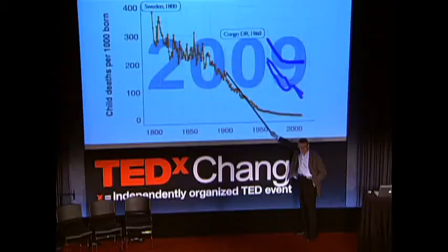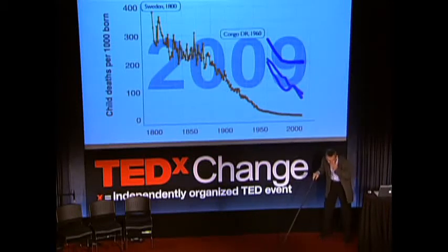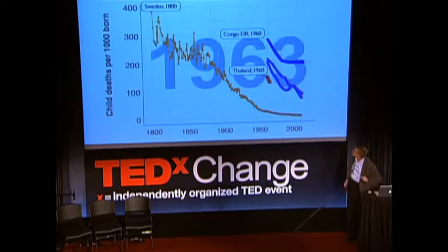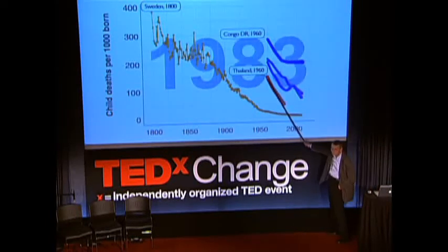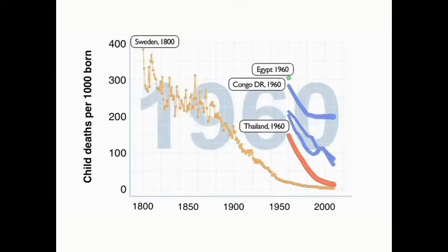Sweden never reached the Millennium Development Goal rate — 3.1% when I calculate — so we are off track. But we want others to do better than we did, and indeed others have been better. Let me show you Thailand: a success story from the 1960s going down to almost the same child mortality levels as Sweden. And Egypt — the most hidden, glorious success in public health. Egypt was up in 1960, higher than Congo.